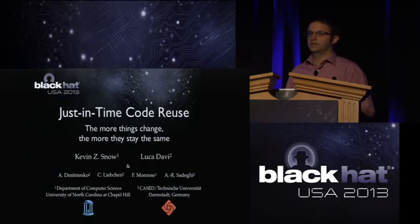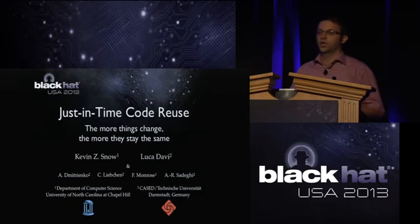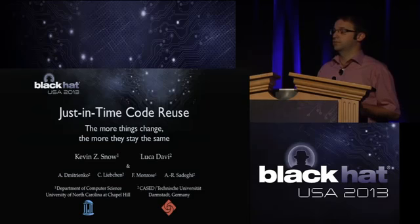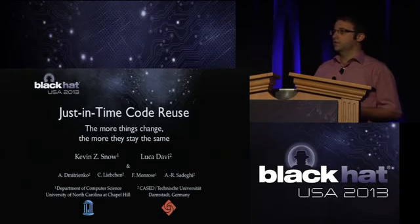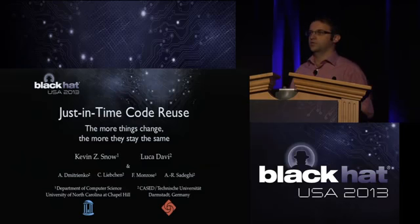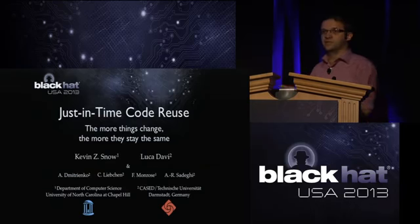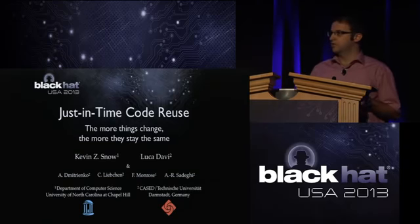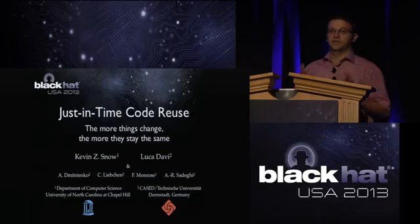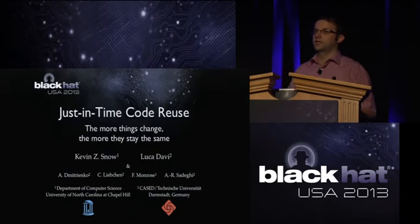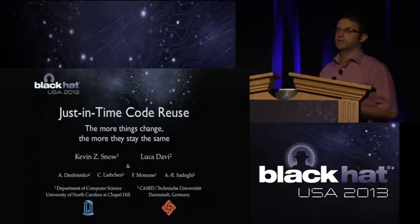A potential defense against these attacks is the enforcement of memory randomization, such as ASLR. However, ASLR is vulnerable to memory disclosure attacks where a single leaked pointer is sufficient to still launch code reuse attacks. To tackle this, researchers investigated fine-grained randomization techniques that randomize not only the base address of a code segment but also its internal structure. Our technique is able to bypass these schemes and identify return-oriented programming gadgets on the fly without requiring any static analysis.